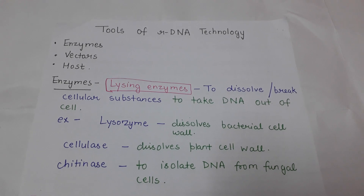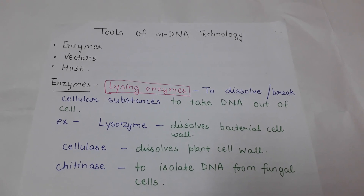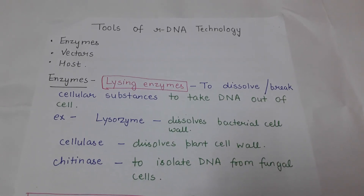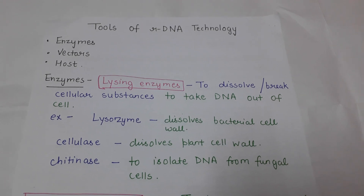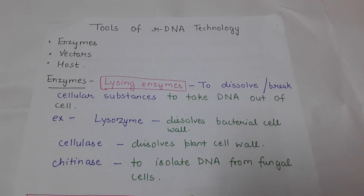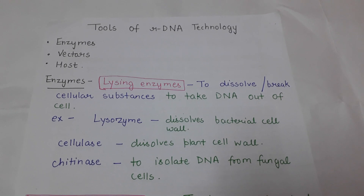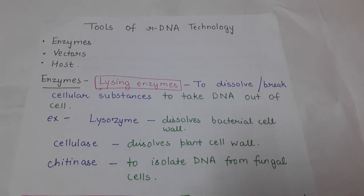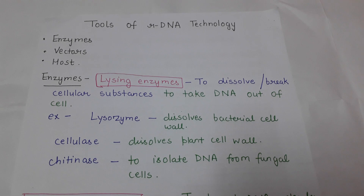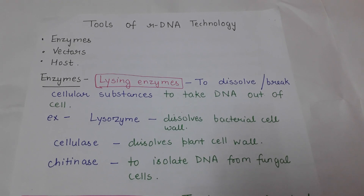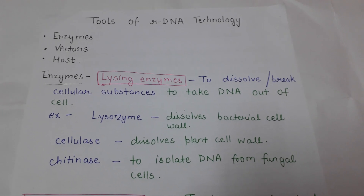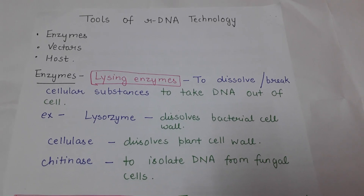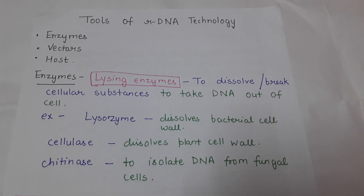There are different types of enzymes used in recombinant DNA technology. First, we have lysing enzymes — enzymes that break down the walls of bacterial cells to isolate bacterial DNA. Different lysing enzymes dissolve different cell types: lysozyme dissolves bacterial cell walls, cellulase dissolves plant cell walls, and chitinase is used to isolate DNA from fungal cells.